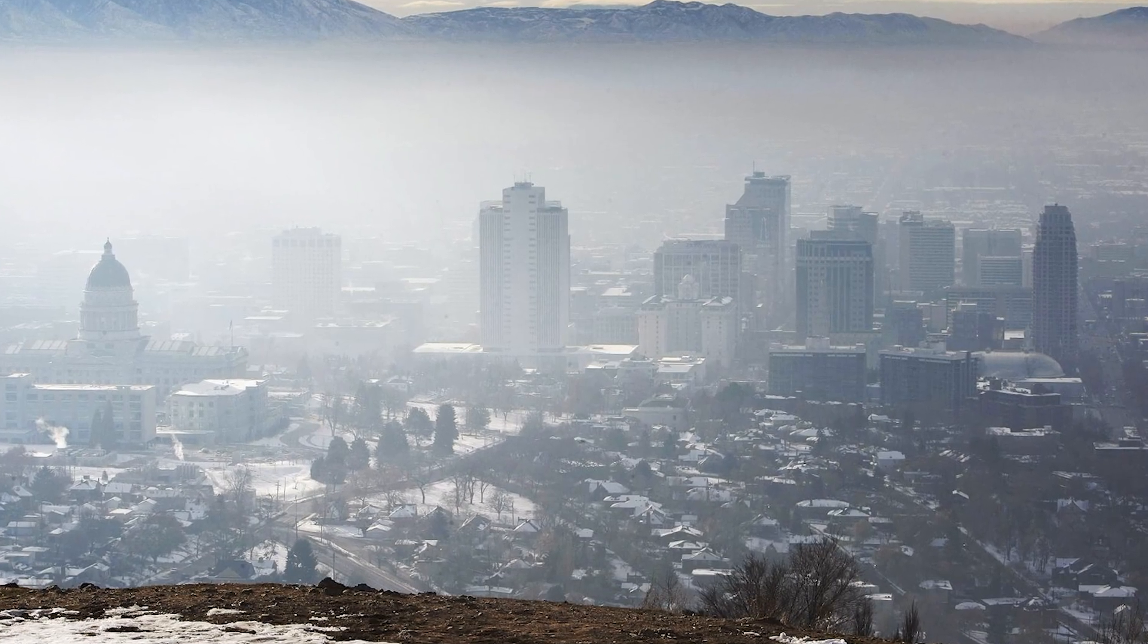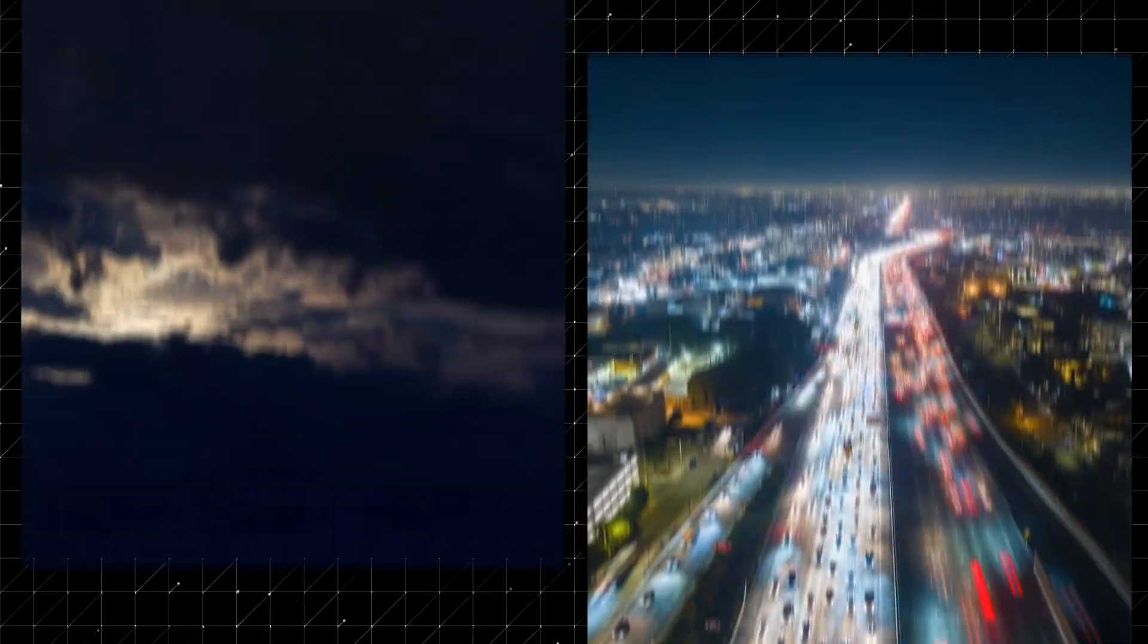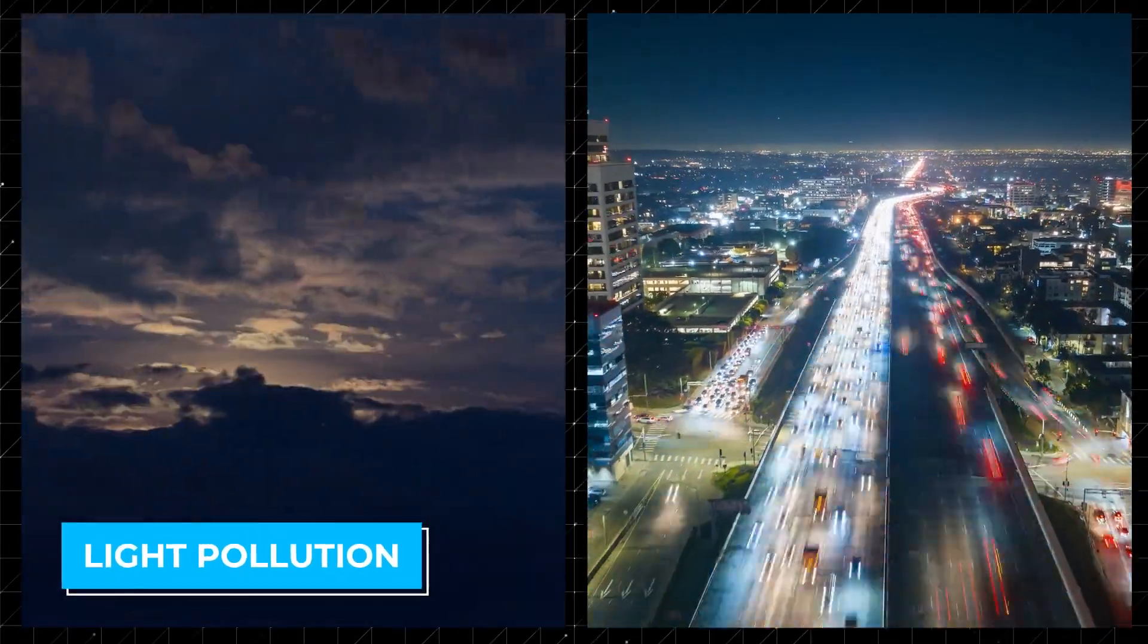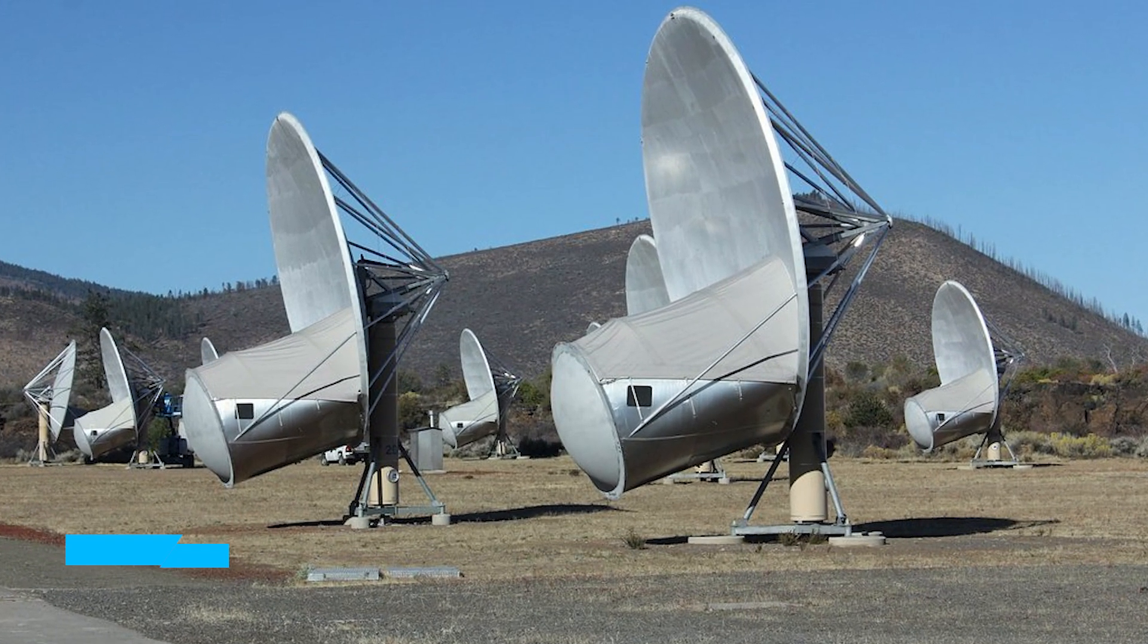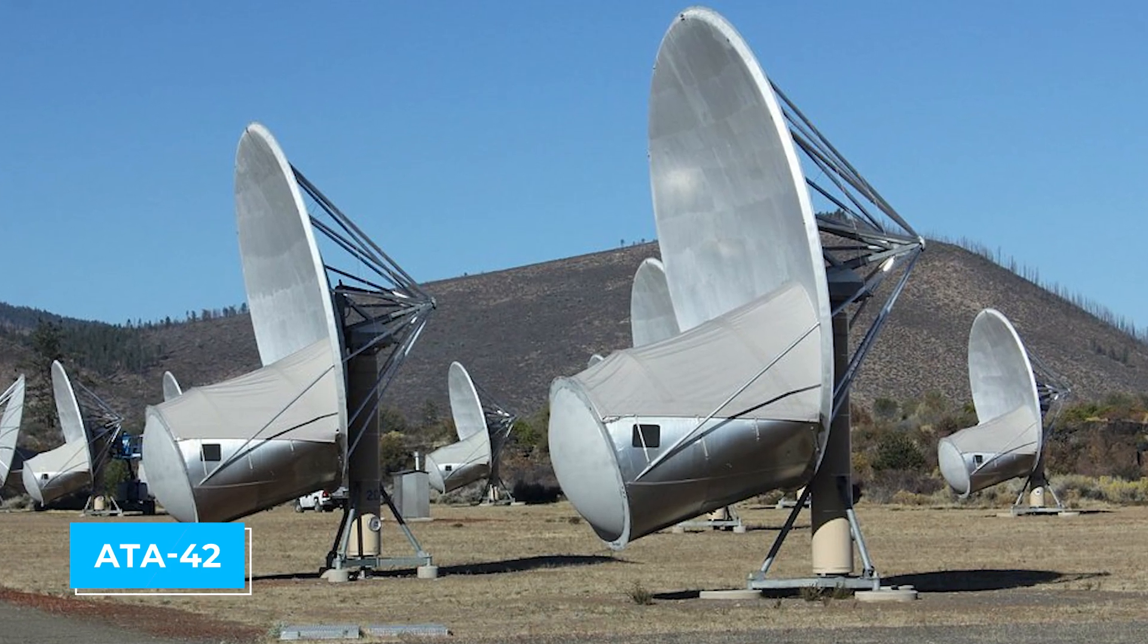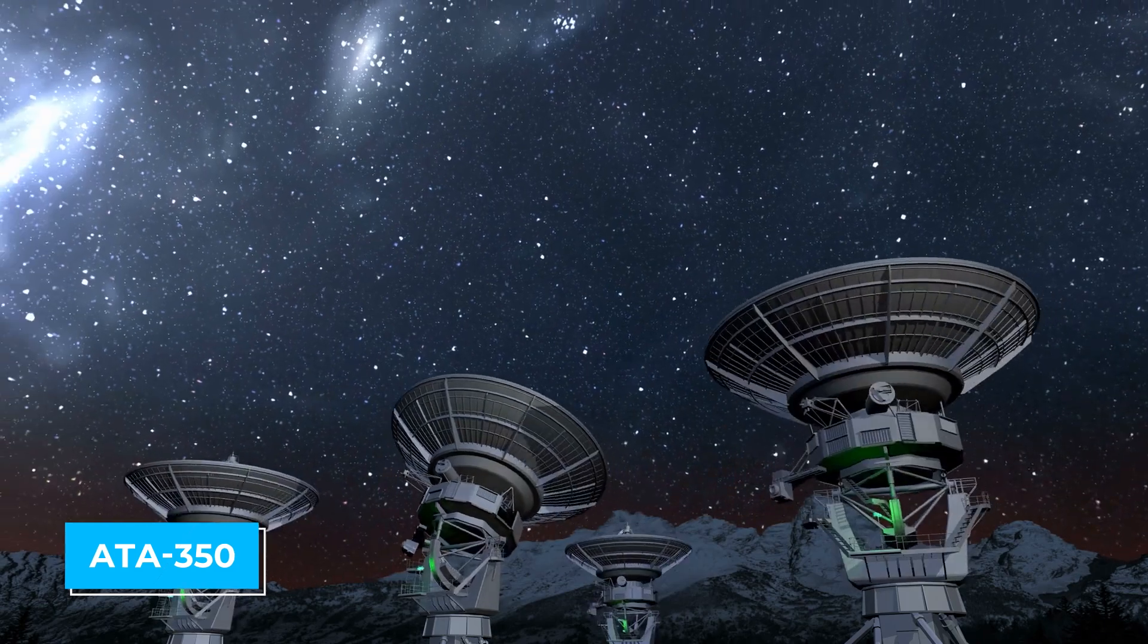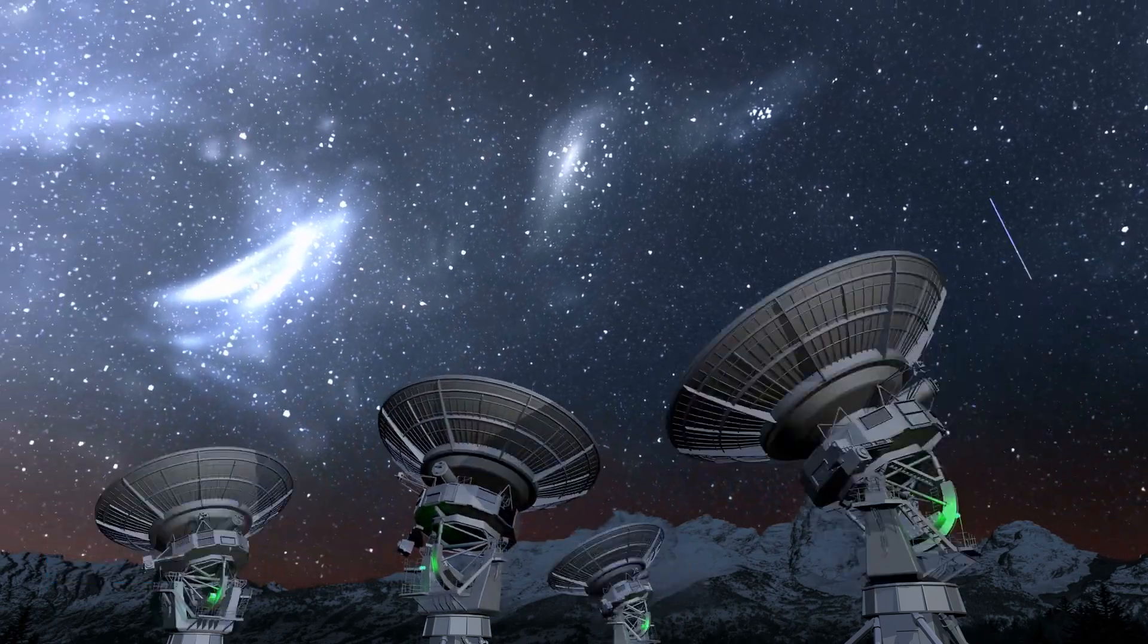Its location in Utah ensures dry air, crucial for clear detection and dark skies to avoid light pollution. The current configuration, known as ATA-42, has a baseline of 300 meters, and there are plans to expand it to ATA-350 with a baseline of 900 meters.